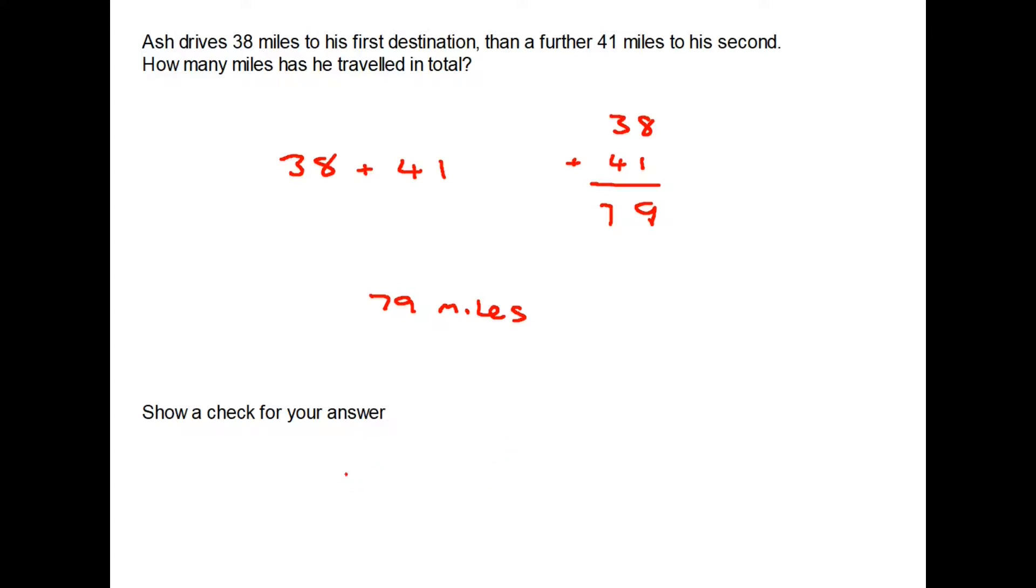Well we simply start with the 79 and we take away the 41 and by doing that the answer we would get would be 38. So the fact that we have done one sum here and we've done another sum here and we've ended up where we started means that one of those sums has checked the other, so all we need to do is a reverse calculation and make sure we end up where we started.